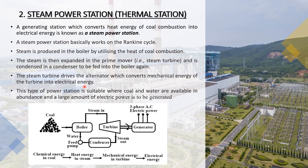The steam turbine drives the alternator which converts mechanical energy of the turbine into electrical energy. This type of power station is suitable where coal and water are available in abundance and a large amount of electric power is to be generated. The energy conversion chain is: chemical energy in coal → heat energy → steam → mechanical energy in turbine → electrical energy.